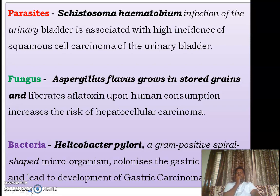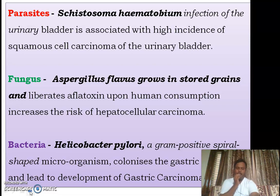Coming to bacteria, Helicobacter pylori — simply called H. pylori, which we discussed in peptic ulcer disease — is a gram-positive spiral-shaped microorganism which colonizes in the gastric mucosa and leads to the development of gastric carcinoma.